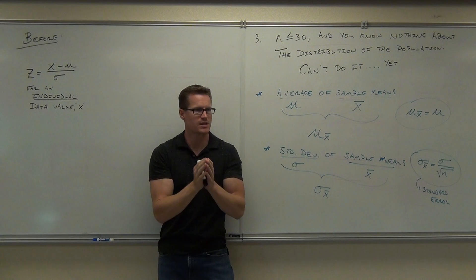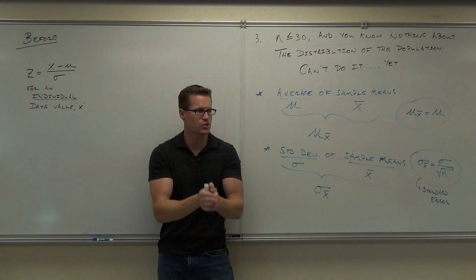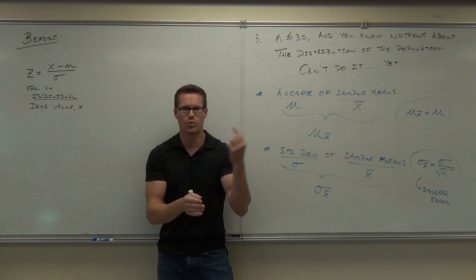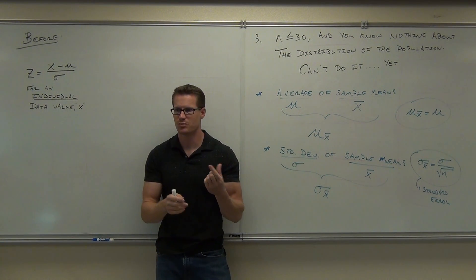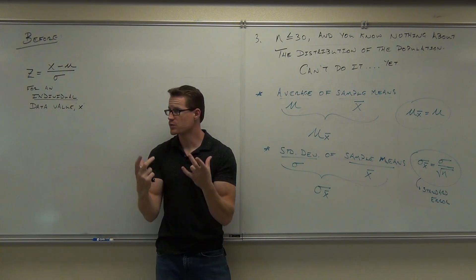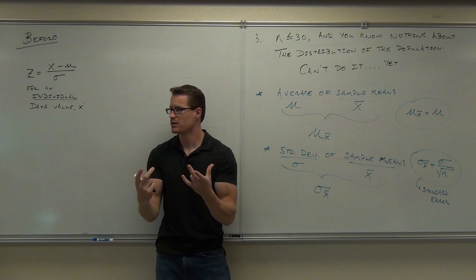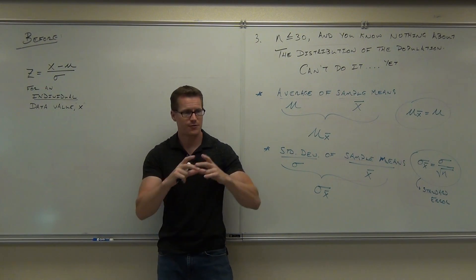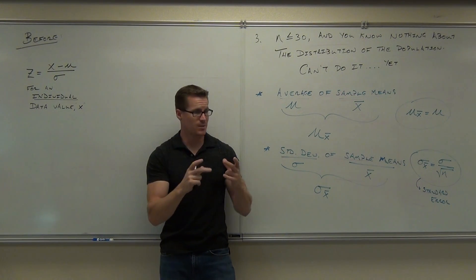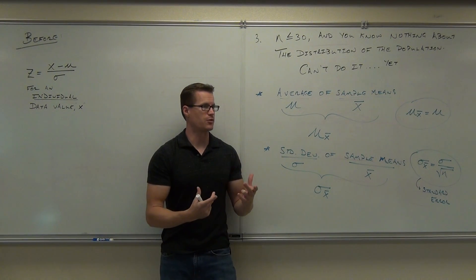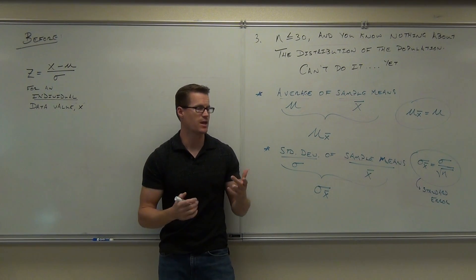Now we're going to make a jump and say we don't just have one value. I'm not just sampling one person out of my group. I'm taking a full sample size, and in that full sample size, I'm going to find the average and the standard deviation.